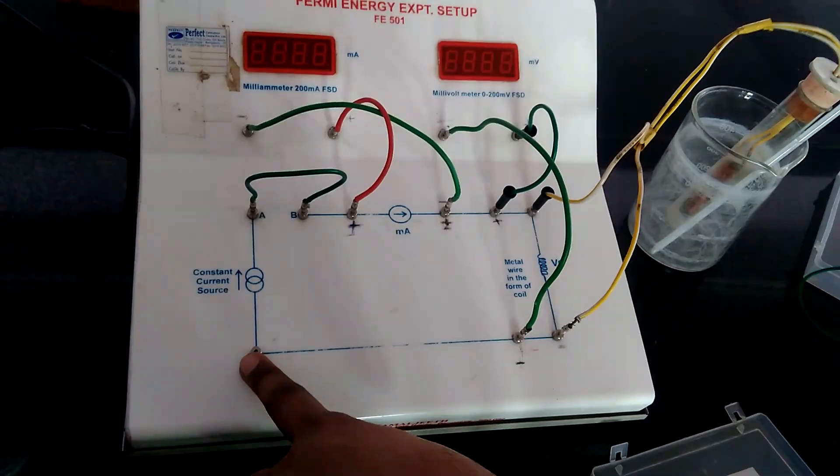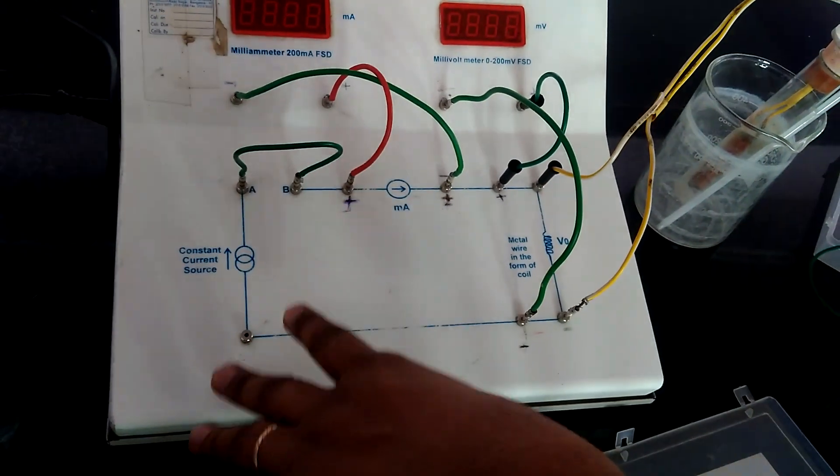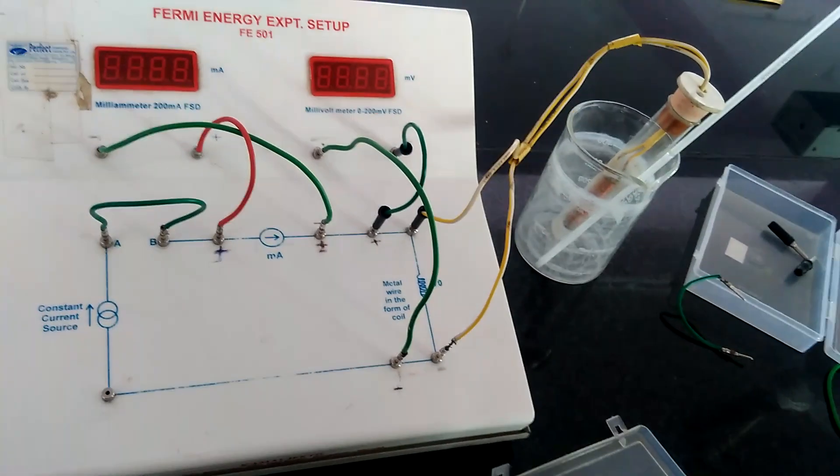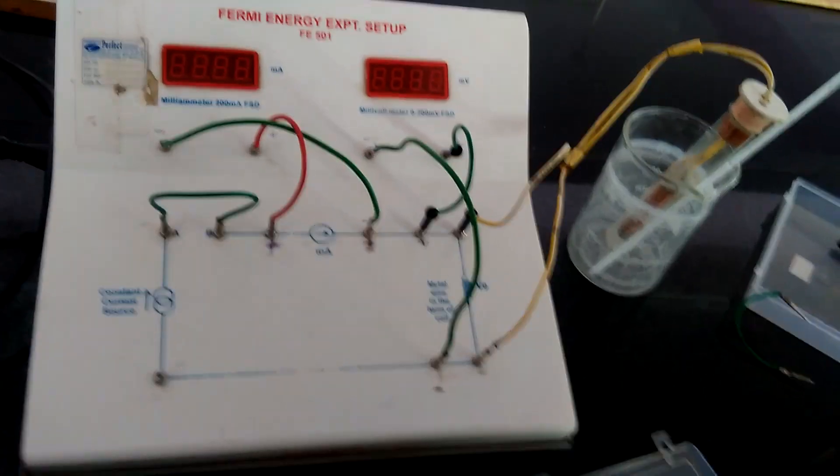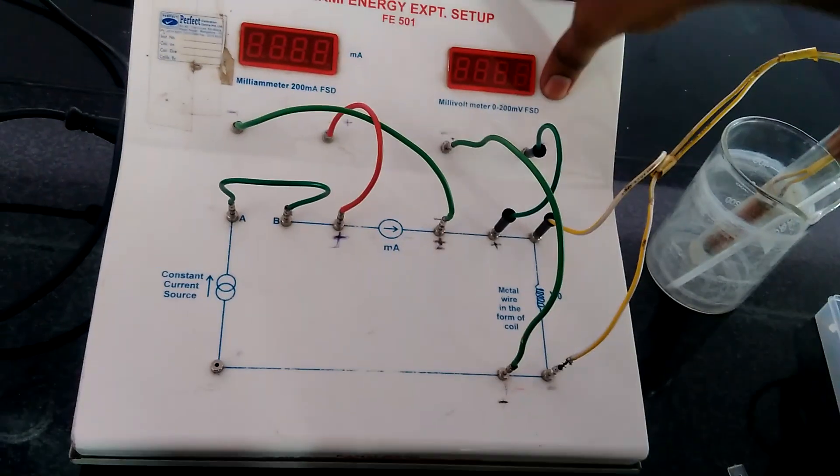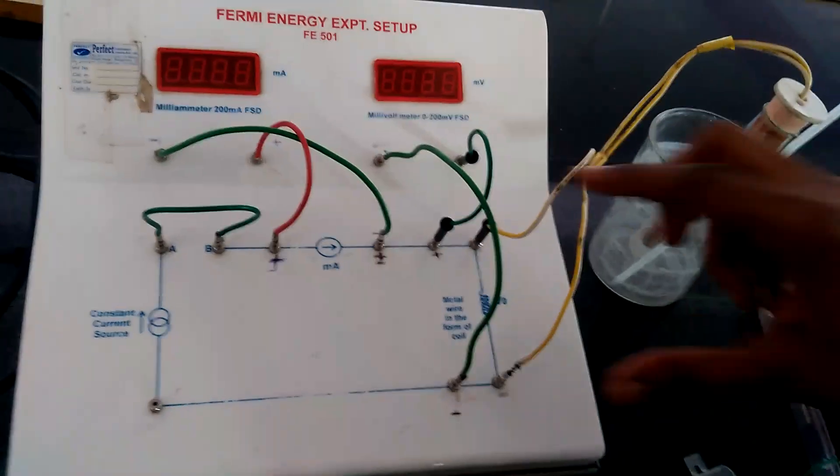This one should be a constant which will not vary. The circuit has a standard. It is not simple to find this one. Only positive to positive, negative to negative. That's it - it should be milliammeter to milliammeter.